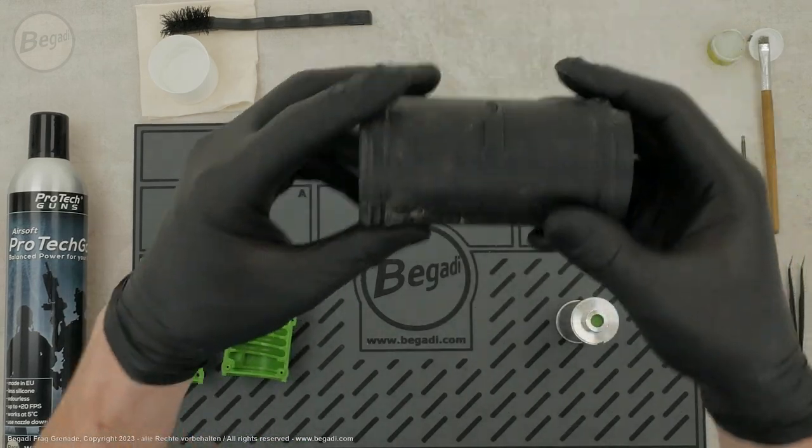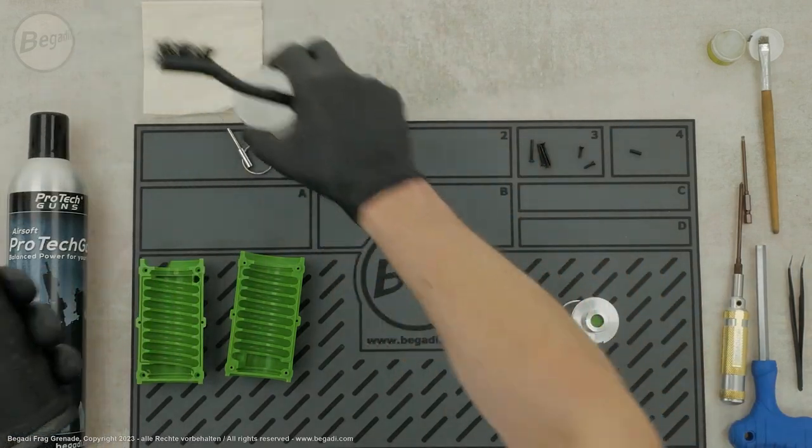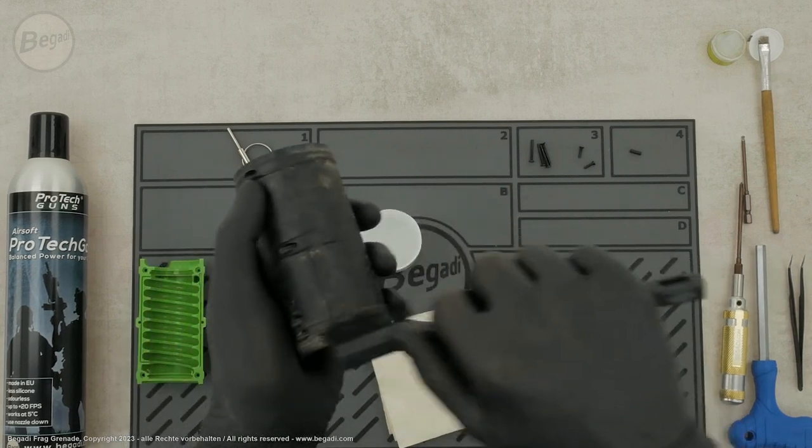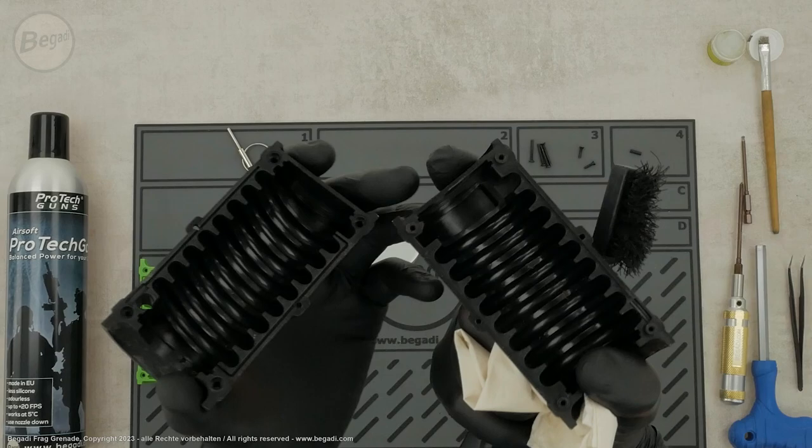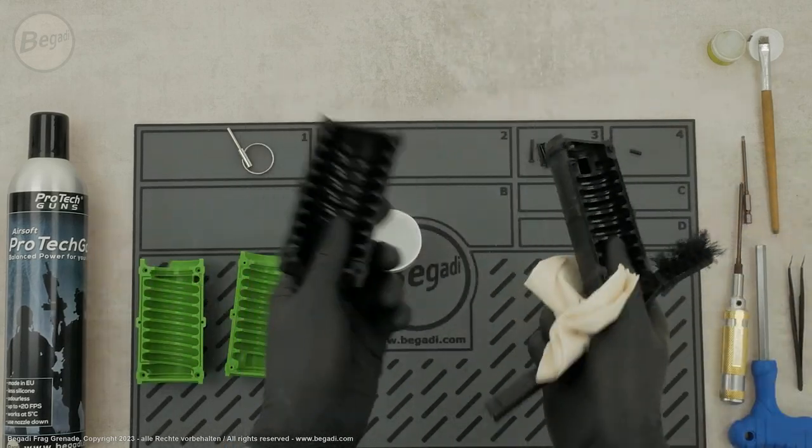If the shell has any impurities, you can clean it in its disassembled state with soapy water, a brush, and a cloth. Allow it to dry thoroughly before reassembly.